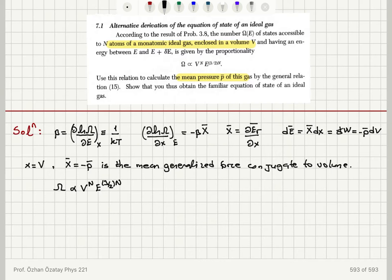Now, if you look at the number of accessible states proportional to V^N times E^(3N/2) for a monatomic ideal gas with N atoms enclosed in a volume V, we have natural logarithm of C plus N ln V plus 3/2 N ln E.